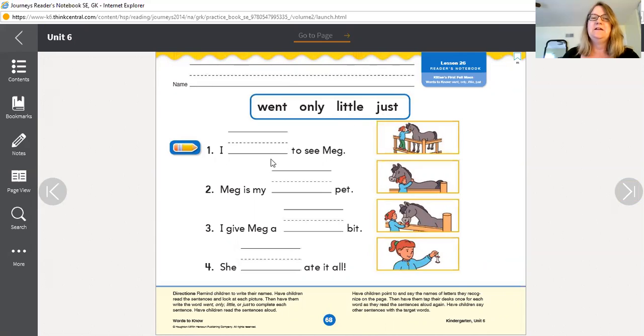I blank to see Meg. So we want to pick one of these words. And if you're not sure, you try them. Let's try the first one. I went to see Meg. That makes sense. So we would write went on the line.